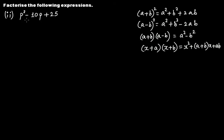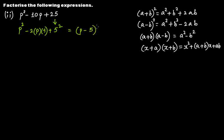For p² - 10p + 25: we write 25 as 5², giving a² and b² terms. We have 2·p·5 = 10p, so this is of the form a² - 2ab + b², which equals (a - b)². Here a = p and b = 5, so the factorization is (p - 5)².